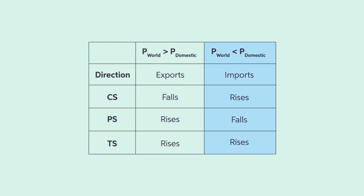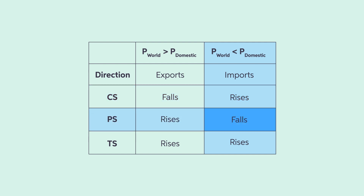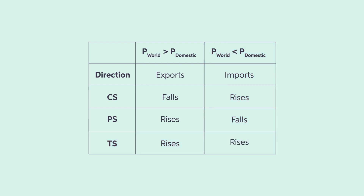When the world price is smaller than the domestic price, the country is an importer. Consumer surplus rises, producer surplus falls, and as a result, consumers are better off and the producers are worse off. The total surplus still increases. Regardless of whether goods are exported or imported, trade creates winners and losers. However, the gains exceed the losses, as seen by the increase in total surplus.